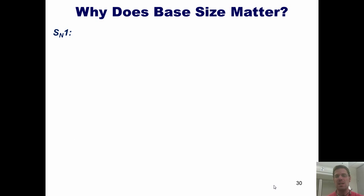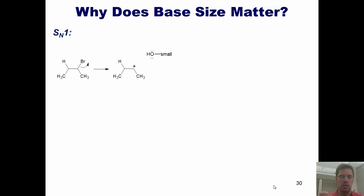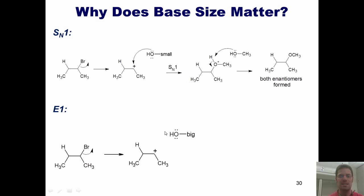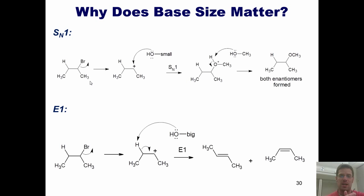The same logic applies for SN1 versus E1 scenarios. In an SN1, the starting material floats around until the leaving group takes off, giving a carbocation intermediate. If the nucleophile/base is small and lacks a strong localized negative charge, it can more easily fit into that hole and do substitution. In an E1, with the same carbocation intermediate, a large weak base is much harder to fit into the positively charged carbocation hole, so it favors grabbing the hydrogen next door and doing elimination, giving the two alkene products with the trans one favored. So yes — base/nucleophile size matters. Smaller ones favor substitution, while larger ones favor elimination.